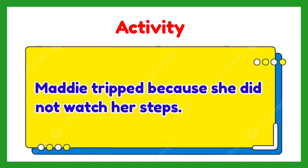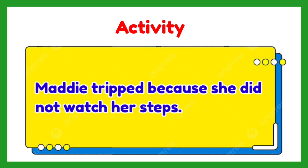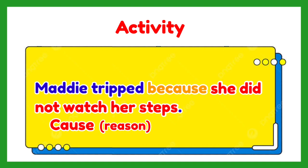'Maddie tripped because she did not watch her steps.' In this sentence, the cause is: she did not watch her steps, introduced by the word 'because.' It is the reason why Maddie tripped. The effect is: Maddie tripped — it is the result of not watching her steps.